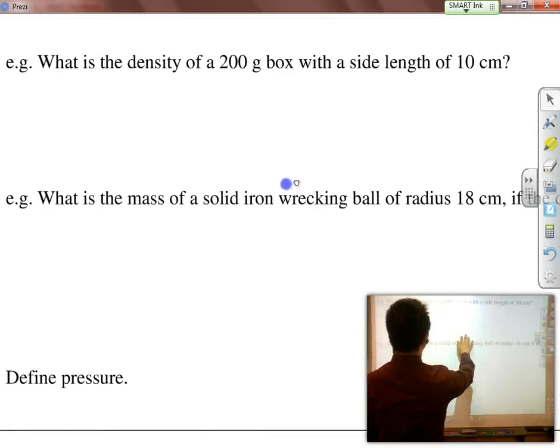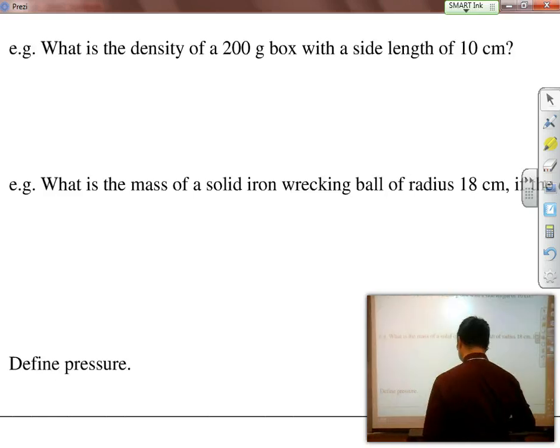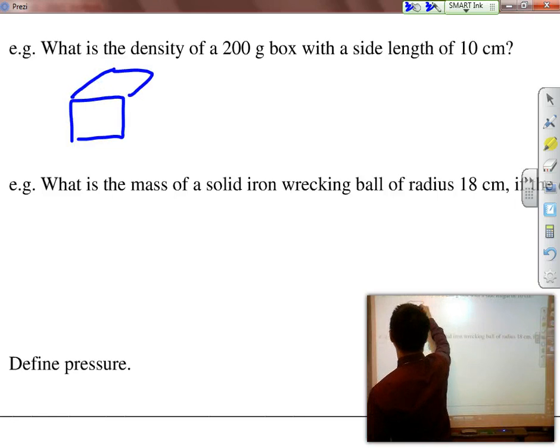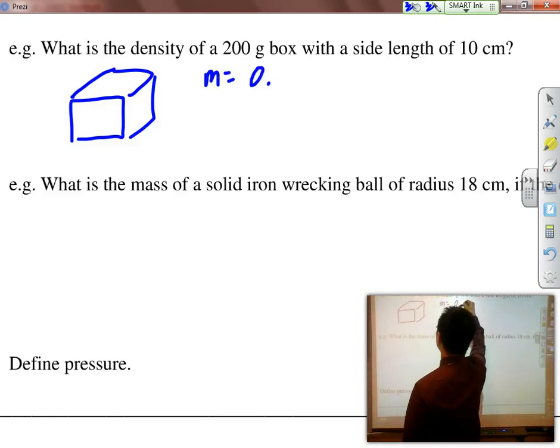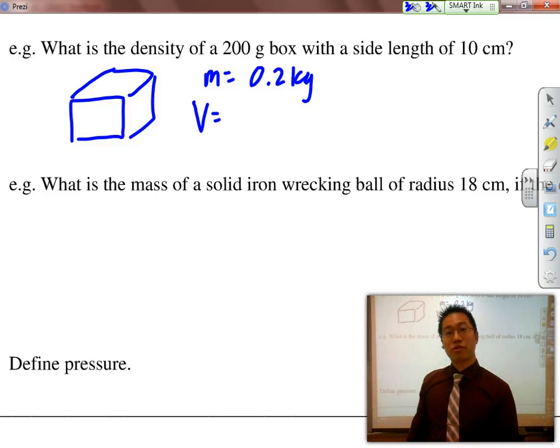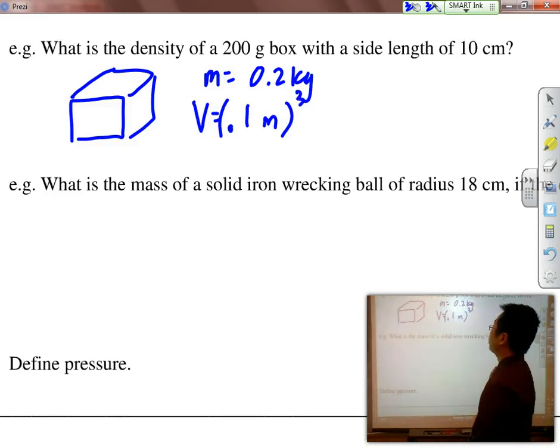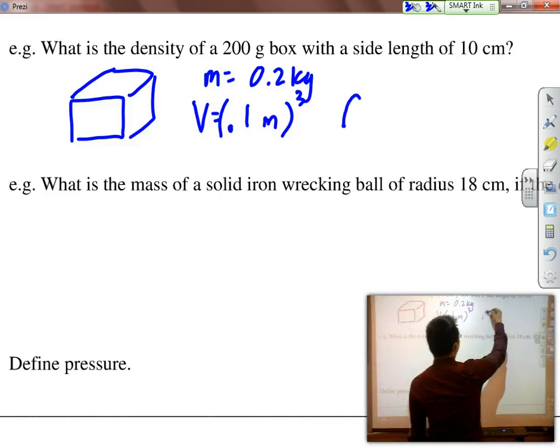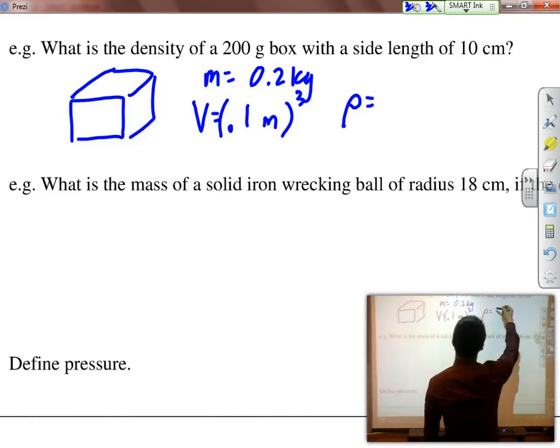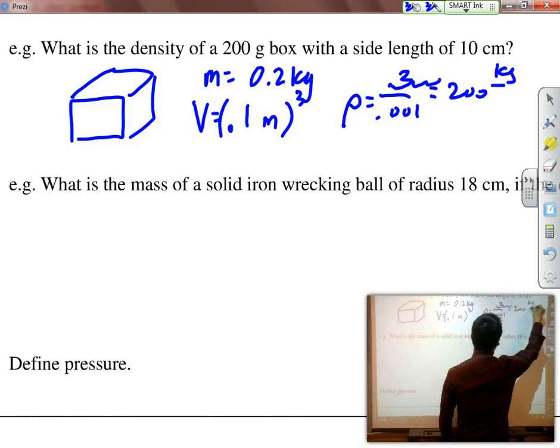Let's do one quick practice question. What is the density of a 200 gram box with a side length of 10 cm? The mass would be 0.2 kg. Volume would be length times width times height. Make sure you convert centimeters to meters before you plug it into the formula. So it would be 0.1 meters cubed. So 0.2 kg would be the mass, the volume is 0.001 meters cubed, and your density would ultimately equal to 2000 kg per meter cubed.